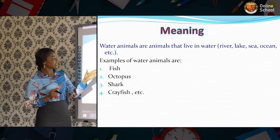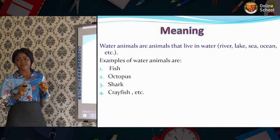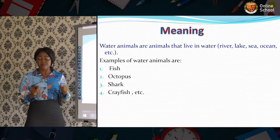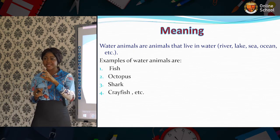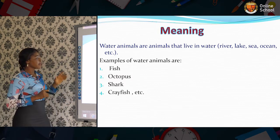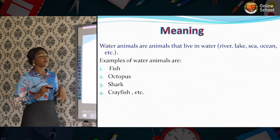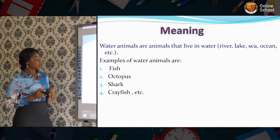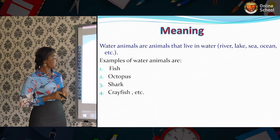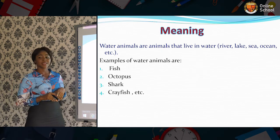So we'll now be looking at examples of water animals. What are the examples of water animals? We have a lot of them, but for this lesson we'll just be learning just a few. So one, I have fish. The second one is octopus. The third one is shark. And the fourth one is crayfish, etc.